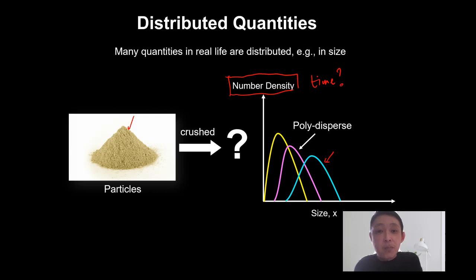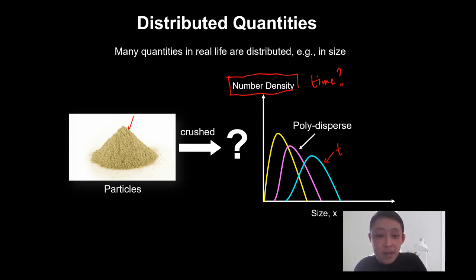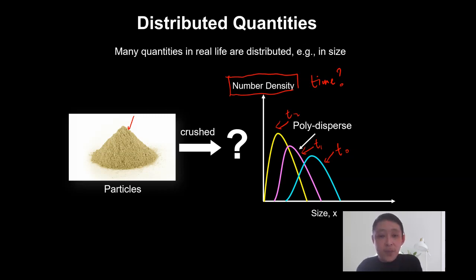When you subject a bunch of particles to milling or grinding, or say these particles are polymers subjected to enzymatic hydrolysis, how does their distribution evolve with time? For example, they can evolve from time zero to time one, and then after some time evolve to another distribution.